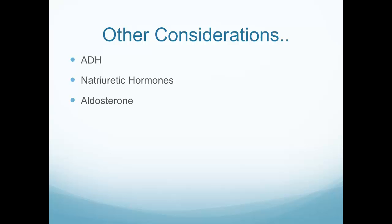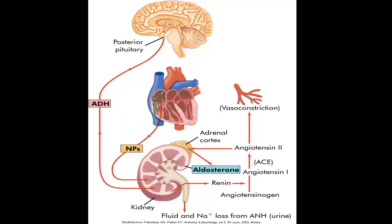Other considerations: we have to consider what's happening with ADH (antidiuretic hormone), natriuretic hormones, and also aldosterone. The posterior pituitary produces antidiuretic hormone, ADH. We talked about situations caused by abnormal ADH levels, such as diabetes insipidus and SIADH.